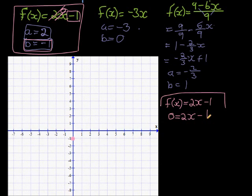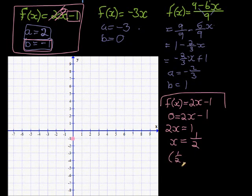And now we can just solve it. So we say, okay, then 2x is equal to positive 1. So x is equal to a half. That means the x-coordinate is a half for the y-coordinate 0.